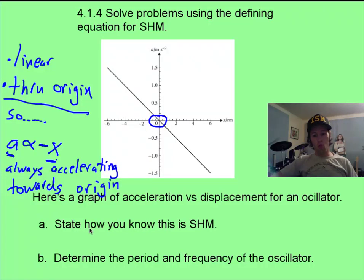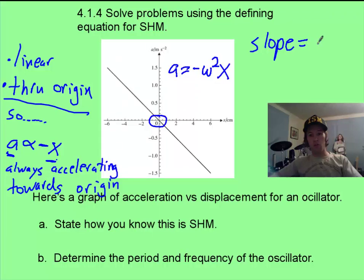Try part B. You might be thinking, how in the world do I find period and frequency from a graph that does not have time on it? But what you can exploit, we are all about exploiting, is that this fact is true. And from this graph, we can say that the slope is going to equal omega squared. Now, find the slope, see what you can do.